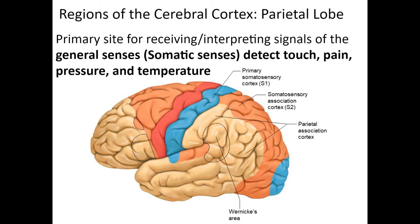Moving to the parietal lobe: it starts at the junction with the frontal lobe with a primary somatic sensory area — receiving sensory information from the skin and skeletal muscles, allowing us to detect touch, pain, pressure, and temperature. That information must then be sent to the somatic sensory association area in order to interpret what it means.